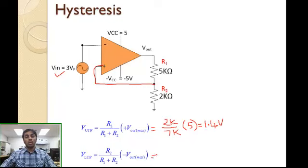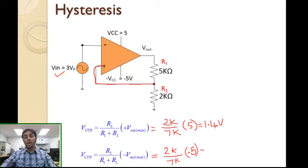The same formula applies for the LTP: it is 2kΩ over 7kΩ, but in this case multiplied by the negative supply voltage of -5 volts, giving an LTP of approximately -1.4 volts.